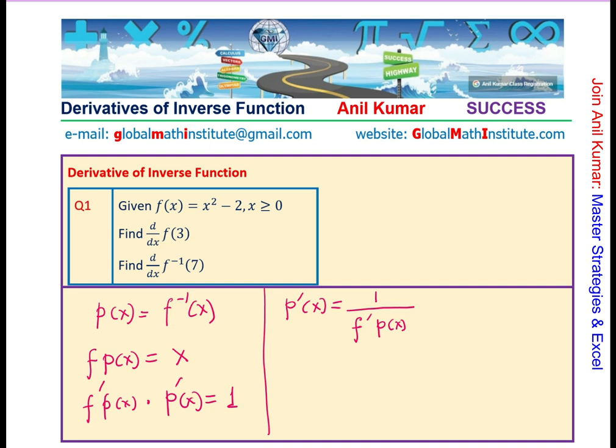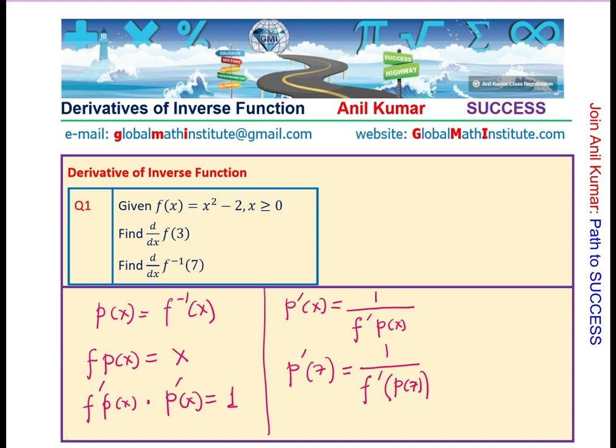Now, in our case, we need to find derivative at 7. So, if I substitute that, p prime of 7 will be equal to 1 over the derivative at p of 7. Correct?